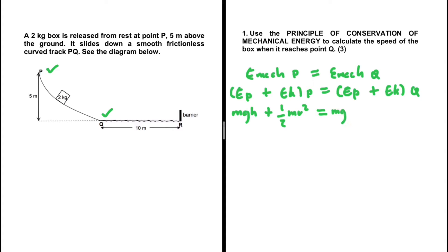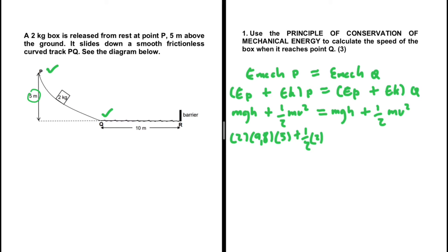Now we substitute values. At point P, the mass is 2 kg, gravitational acceleration is 9.8 m/s², and the height is 5 meters. For the kinetic energy at P, the mass is 2 kg.